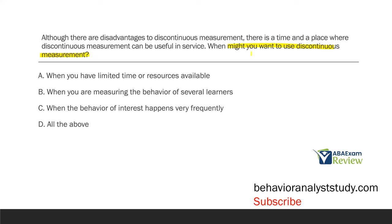When might you want to use discontinuous measurement? Answer A: when you have limited time and resources available. If you can only take data for 20 minutes, that data is better than no data, so discontinuous measurement might be applicable. Answer B: when you're measuring the behavior of several learners. Think about planned activity checks or PLACHECK — that is exactly what B is talking about: a group discontinuous measurement system. Answer C: when the behavior of interest happens very frequently. If you know behavior happens all day every day, maybe a sample will tell you all you need to know about the big picture. A, B, and C are all very relevant times you might want to use discontinuous measurement. Don't write off interventions just because they don't work in some scenarios — everything you do needs to be individualized.